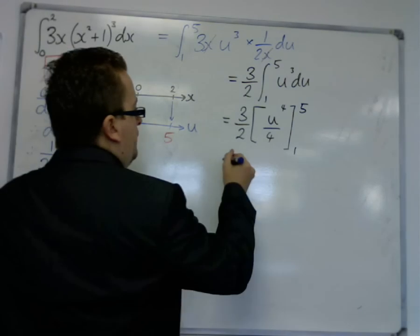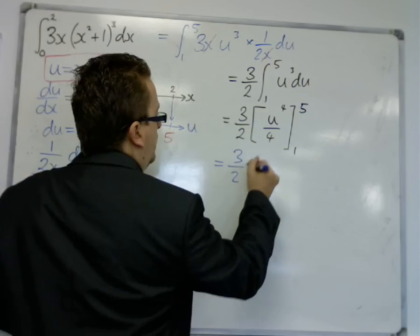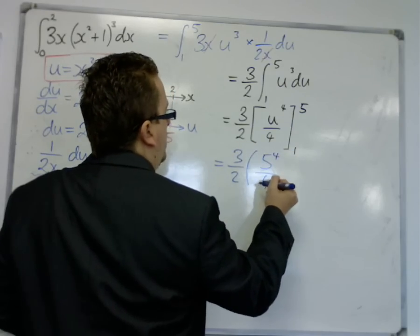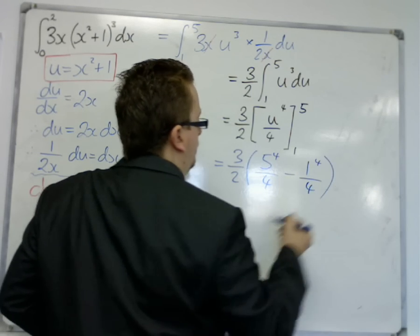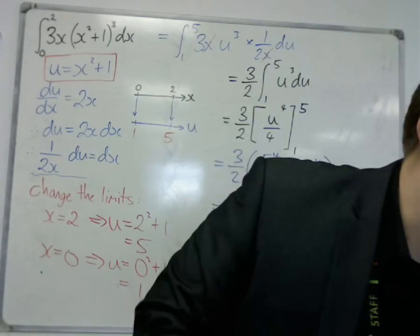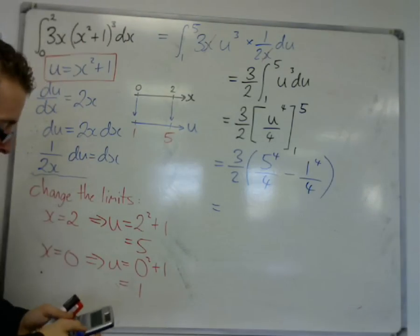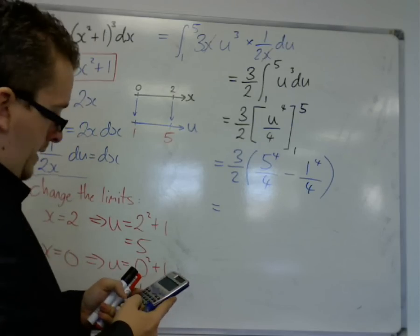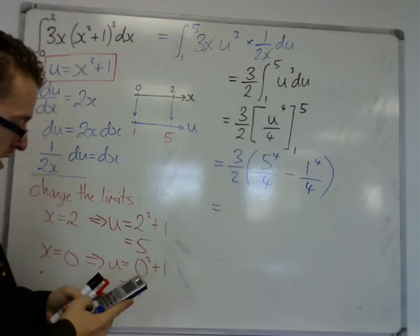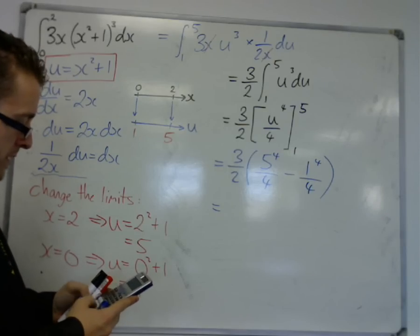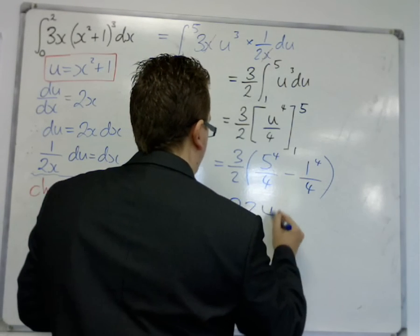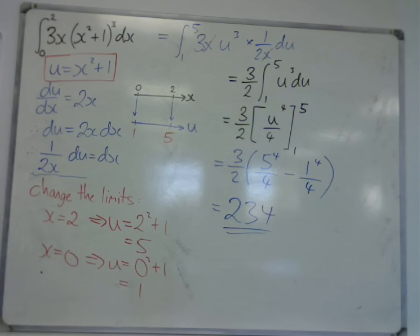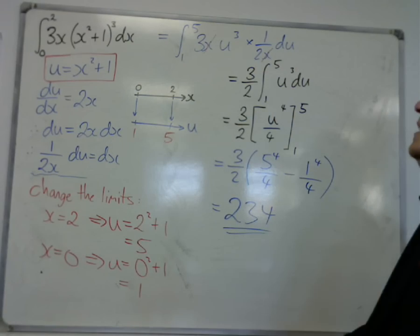So we substitute in 5 first. So 5 to the 4 over 4. Then take away, substituting in 1. Plug this into your calculator. So we get 5 to the power of 4 over 4, take away a quarter, times by 3, divide by 2, is 234.